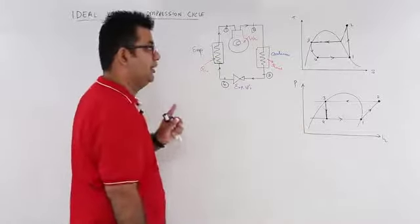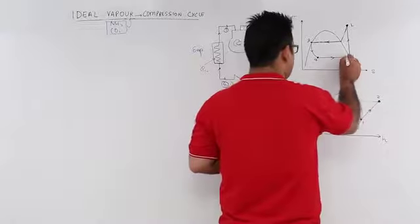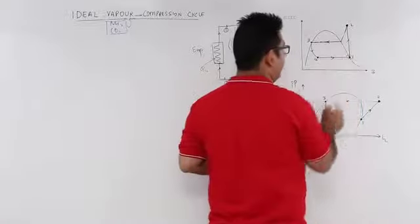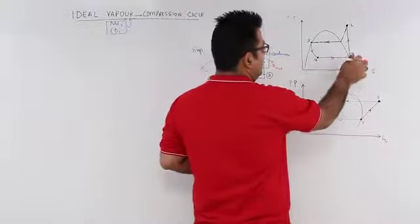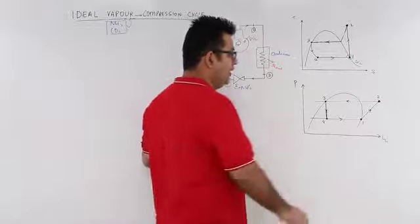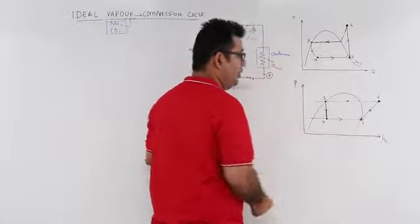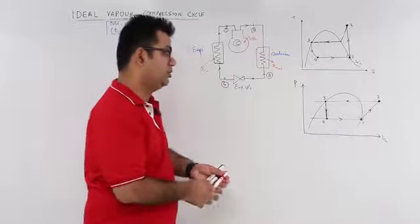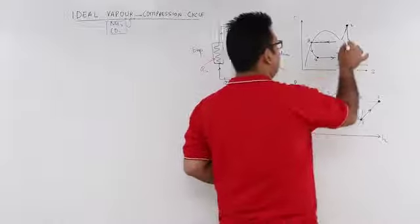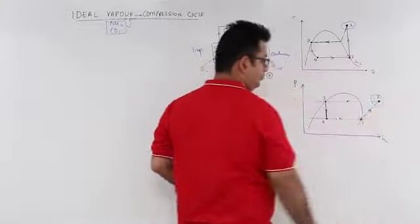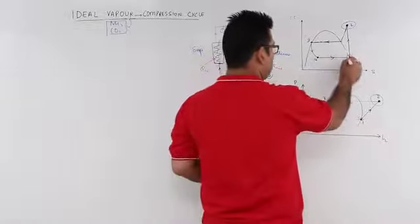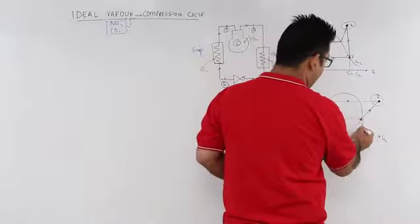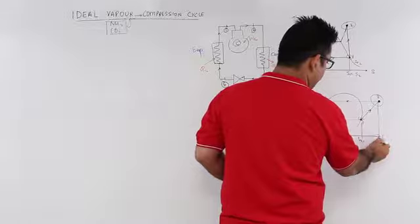If you look at the TS and PH plots for the ideal compression cycle, it is always assumed that the vapour enters the compressor after the evaporator at saturated condition — it is on the saturated vapour line. In the PH plot this is the point at which vapours enter the compressor at state 1. After isentropic compression, the vapours attain a superheated state at point 2, and the enthalpy has increased.